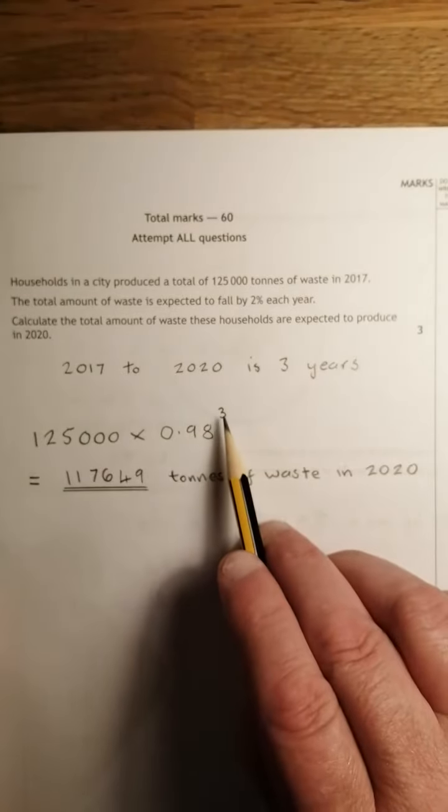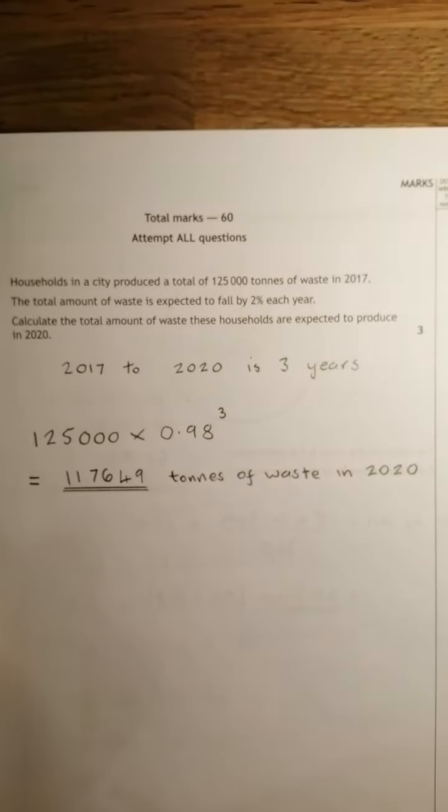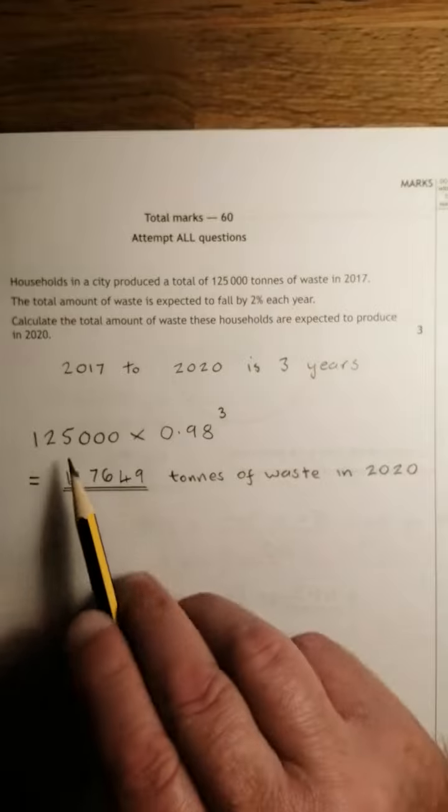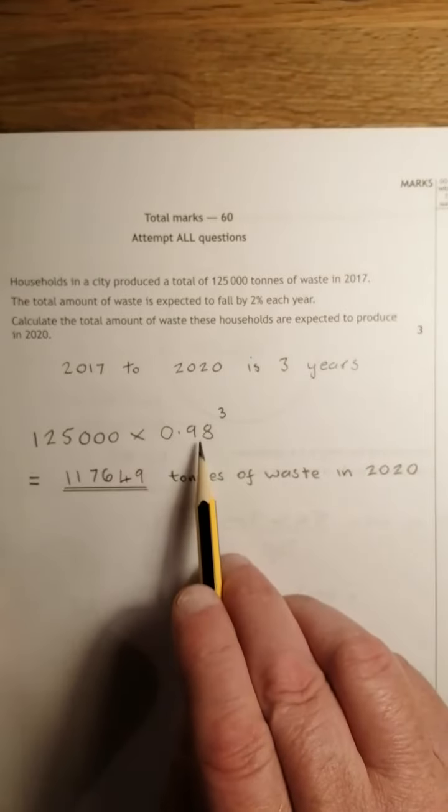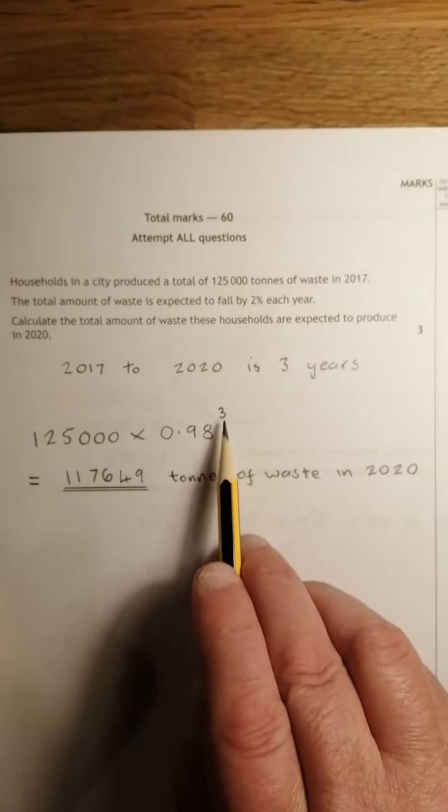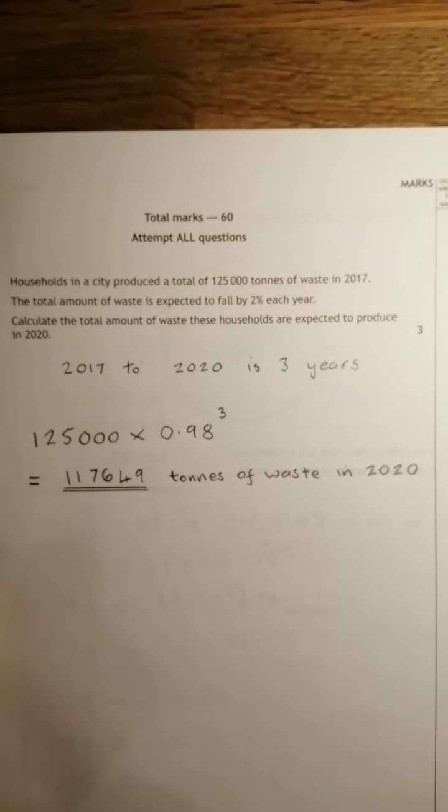And if it's going to be done 3 times, then you take it to the power of 3. So how much is going to be expected? 125,000 times 0.98 to the power of 3, which the calculator says is 117,649 tonnes of waste in 2020. That's number 1.